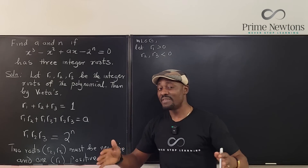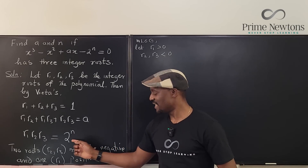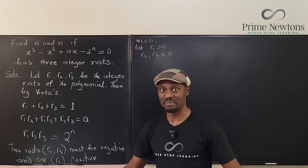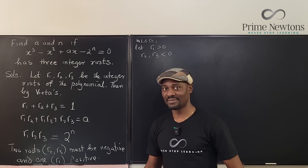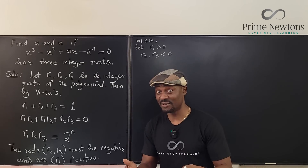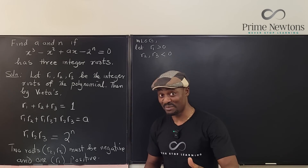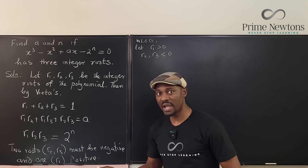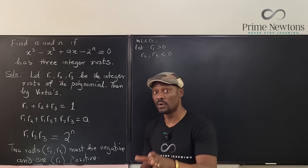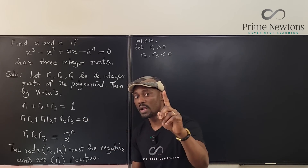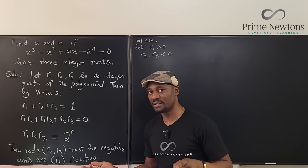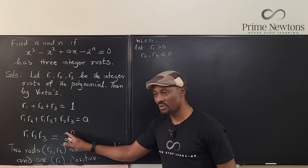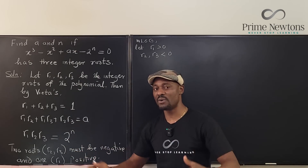If the product of any set of numbers is a power of two, then all the numbers being multiplied must be powers of two in magnitude. It could be positive or negative, but ignoring the sign, the numbers must be powers of two — so 1, 2, 4, 8, 16 — or ones, since 1 doesn't change the product. Any other factor would prevent the result from being purely 2 raised to a power.